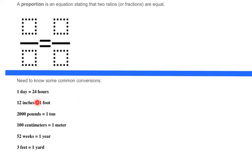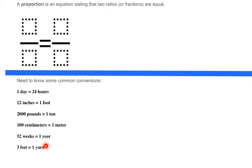As you go through these problems in Study Island, there are some common conversions you need to know: one day equals 24 hours, 12 inches in one foot, 2,000 pounds in a ton, 100 centimeters in a meter, 52 weeks in a year, and three feet in one yard.